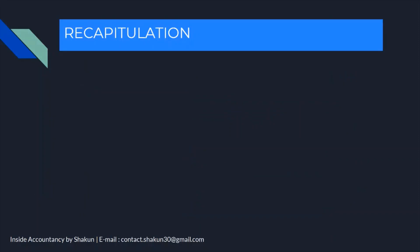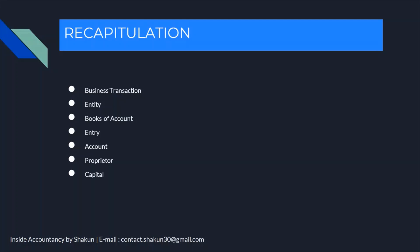In this video, we have talked about basic terms important for accountancy: Business Transaction — an economic transaction; Entity — a business or accounting entity; Books of Accounts — journal, ledger, etc.; Entry — when a transaction is recorded; Account — the T-shaped account where all items are recorded under one head; Proprietor — the owner; Capital — the money invested by the proprietor; Drawings — the money withdrawn by the proprietor for personal use; Liabilities — the obligations the business has towards third parties or the owner; and Assets — anything of value or any property owned by the business.